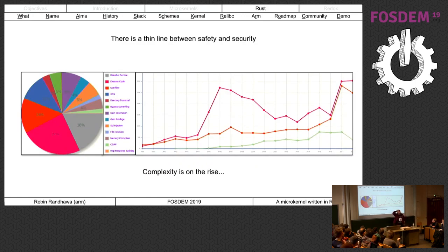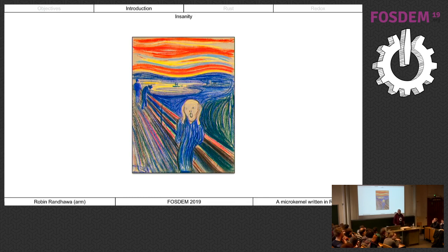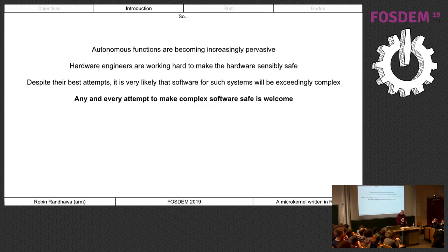The thin line between safety and security: data from CVE Details shows that some of the most common causes of security - and I'd say safety - related problems involve buffer overflows, use-after-free, and privilege escalation. I spend a lot of time screaming silently in a padded room because I'm uncomfortable with more complexity when the question is about a person's life. Autonomous functions started in cars but are now going into drones, robots, and industrial assembly lines. Hardware engineers are trying hard to make this safe, but software complexity keeps going higher.